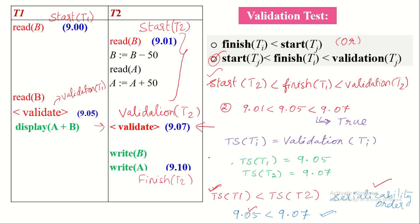One more important point: this validation based protocol is also called the optimistic concurrency control protocol. This is because the protocol does not impose many restrictions — it permits all transactions, irrespective of the operation they perform, to do read as well as ALU operations. Once finished, only then does it perform the validation test. It permits all transactions with the hope that they will not violate the consistency of the database. That is why this validation based protocol is also known as the optimistic concurrency control protocol.